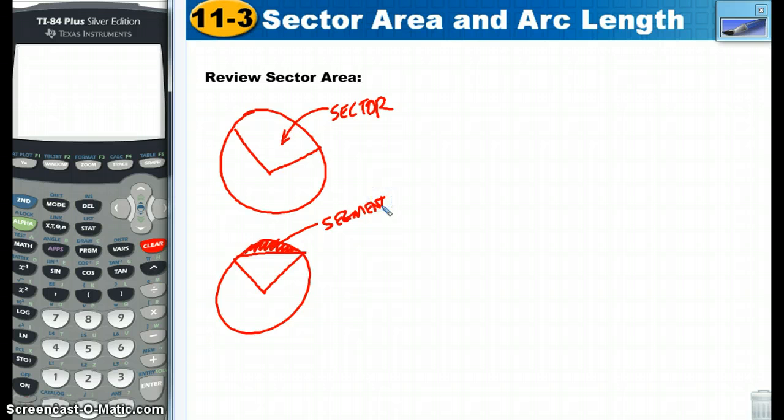And this is simply some fraction. The area is equal to some fraction, which we're going to say some degree out of 360, times the area of a circle. So that's area of a sector.